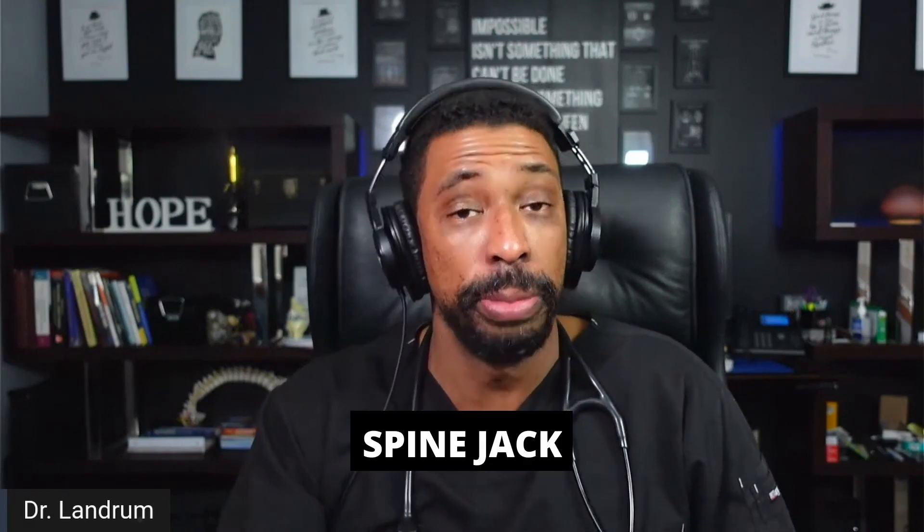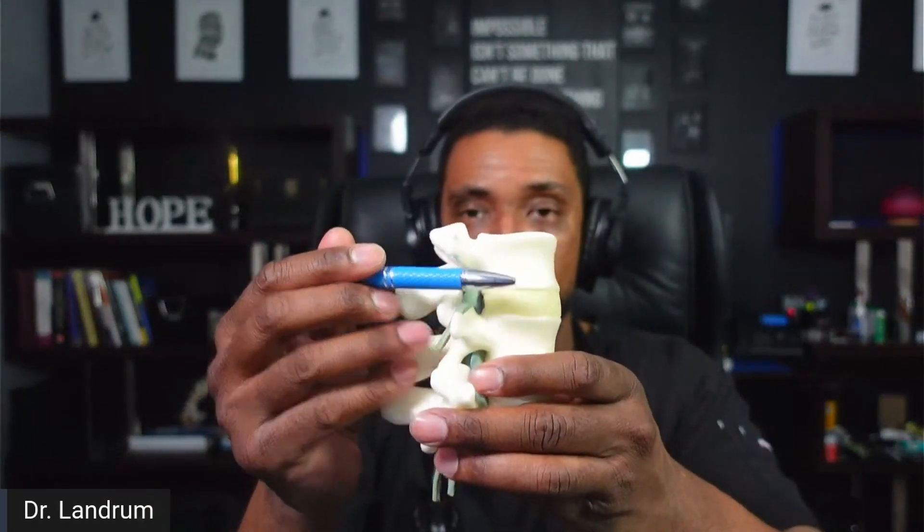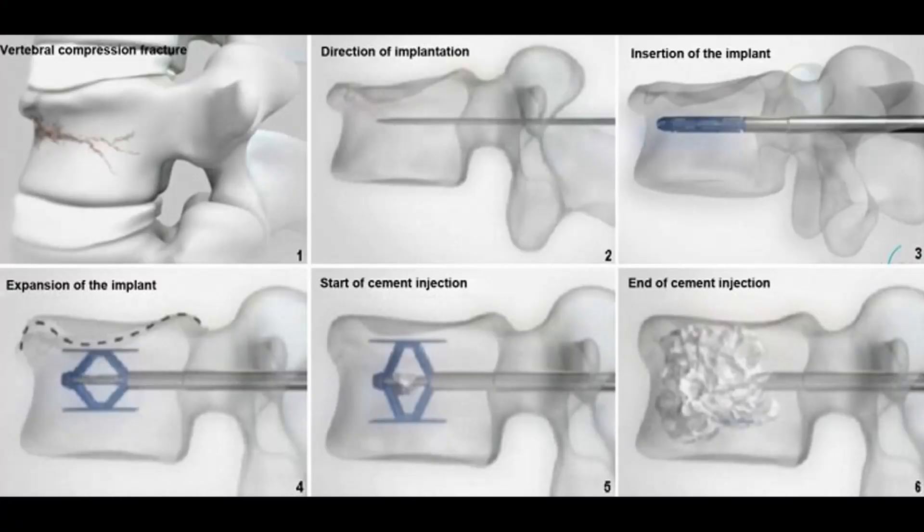Finally, there's a procedure called a spine jack. As you'd expect from the name, it is a jack — similar to a car jack when you're changing a tire — placed in a similar fashion. Instead of relying on a balloon, it has a mechanical extension that actually takes the end plates — the top and bottom of the vertebral bone — and expands them. All these options can provide pain relief, and all are percutaneous, meaning they're done through a needle without a major incision, allowing patients to return home the same day. New technology can provide benefits for patients that historically haven't been available.